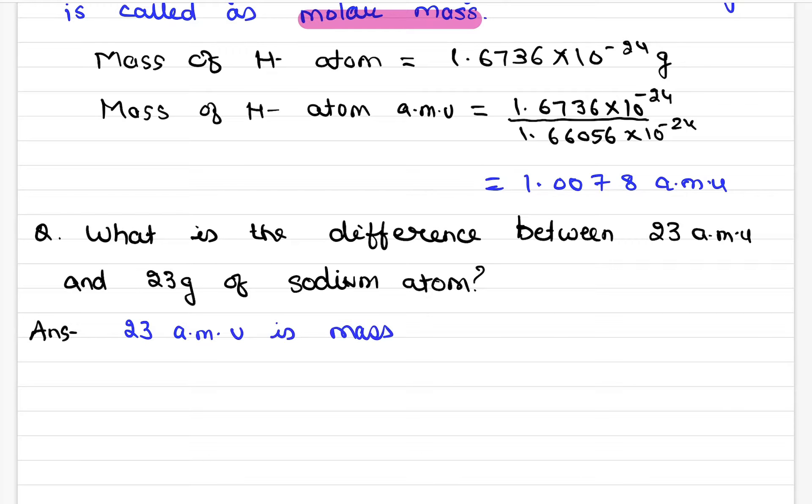Now question is, 23 AMU and 23 AMU is mass of 1 sodium atom. This is 1 sodium atom mass. And 23 gram mass is 6.022 × 10^23 sodium atom.